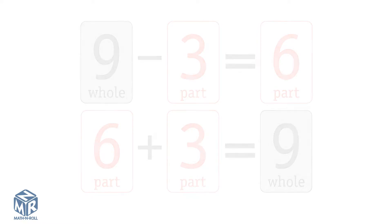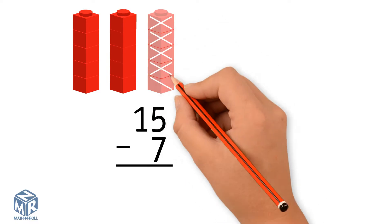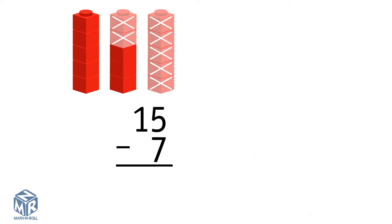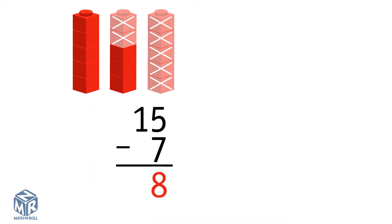Let's look at an example. 15 minus 7. Take a look at the model. We have 15 cubes, and we want to subtract 7 cubes. We are left with 8 cubes. 15 is our whole, and 7 and 8 are parts.